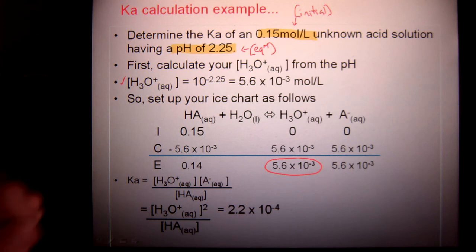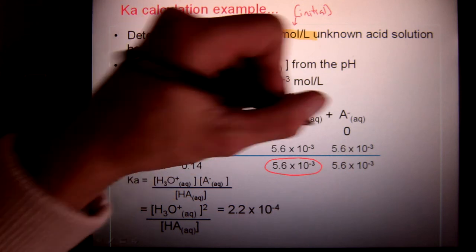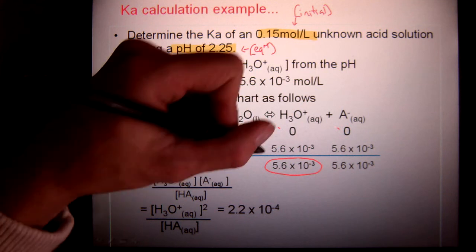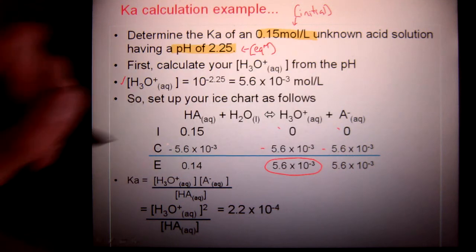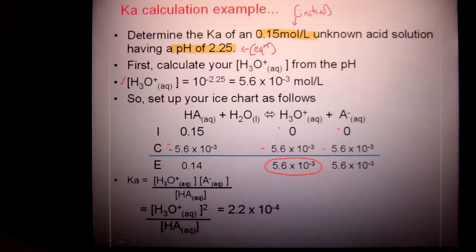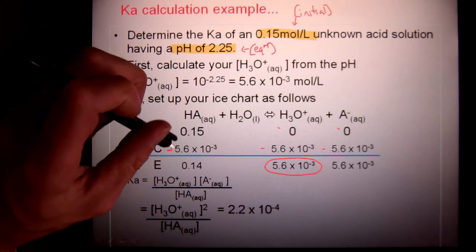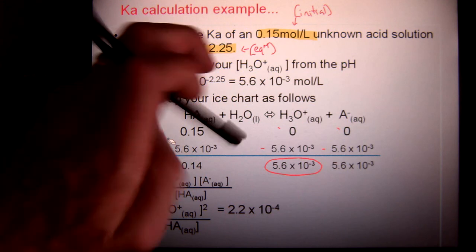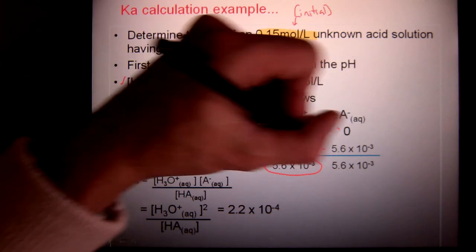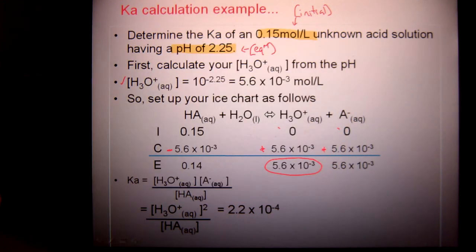Now I see that I started with zero as we did before. Now I have my change value. It's always one to one to one so that makes it simple. My reactants go down so I have a minus value here. My products go up so they're positive and then I can plug in my values and that's it.